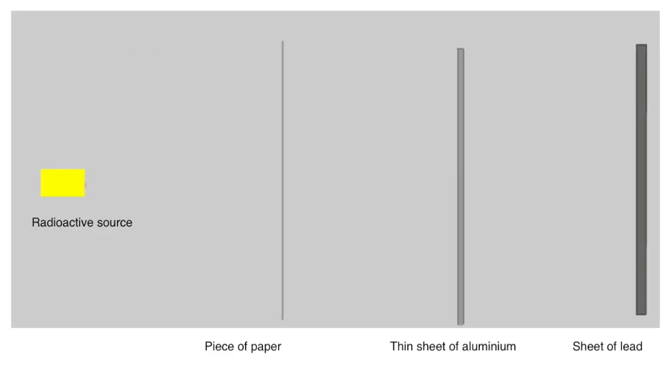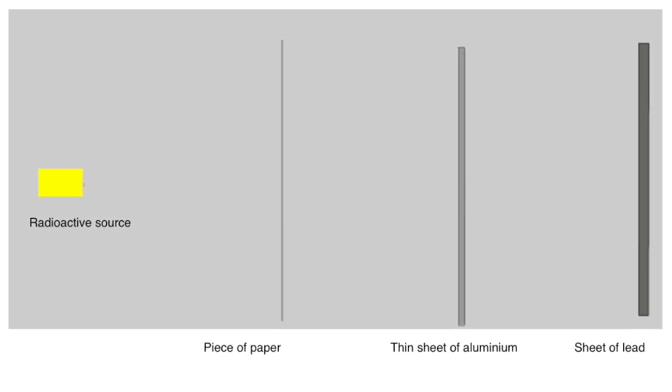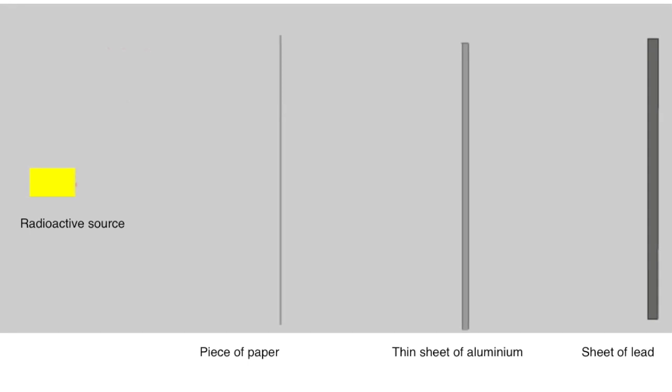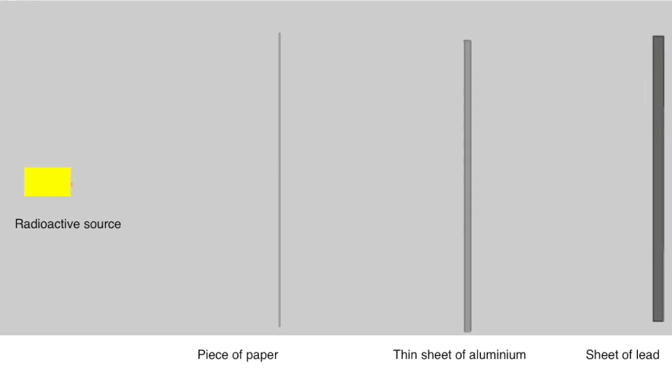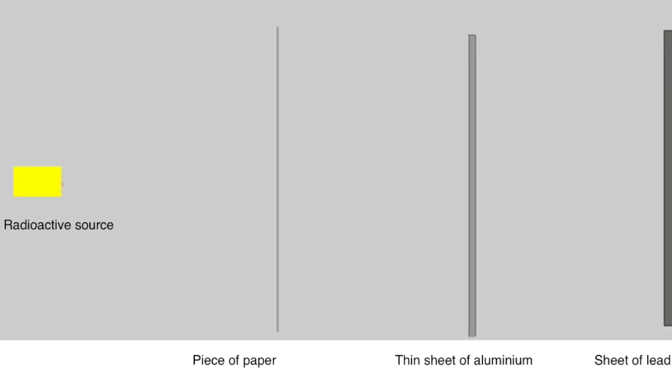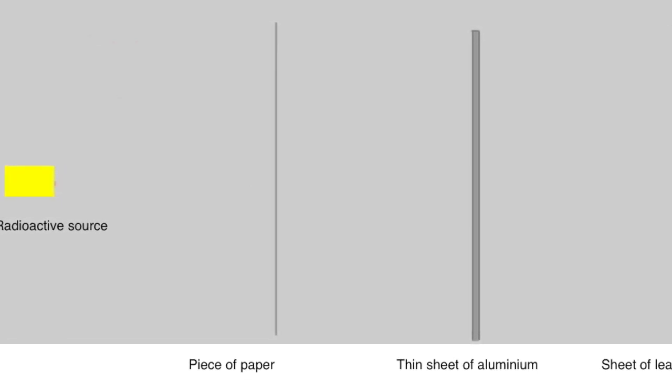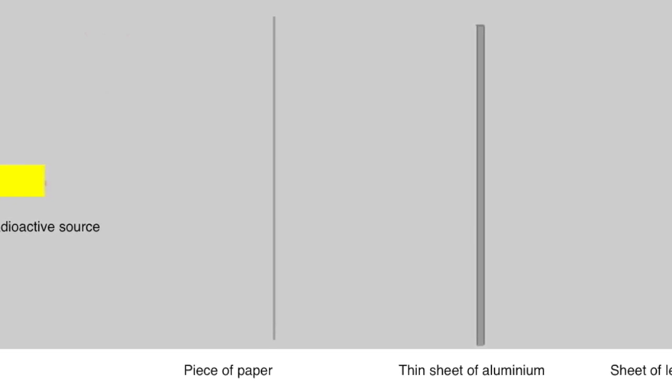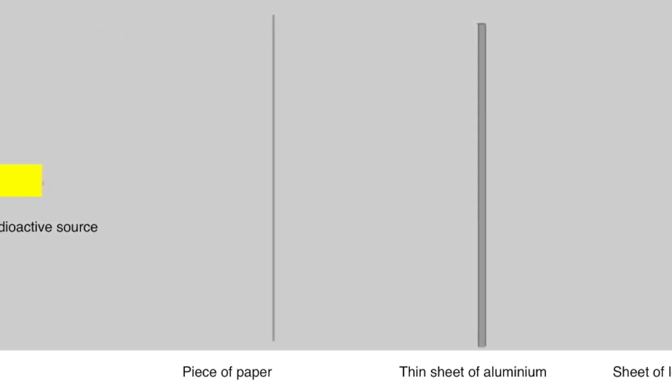Setting up a simulation here with a radioactive source, a sheet of paper some way away, a thin sheet of aluminum, and then a sheet of fairly thick lead. Using a simulation because radioactivity is impossible to actually see in practice. The whole thing would have to be in a vacuum because air does absorb some of the radioactivity.